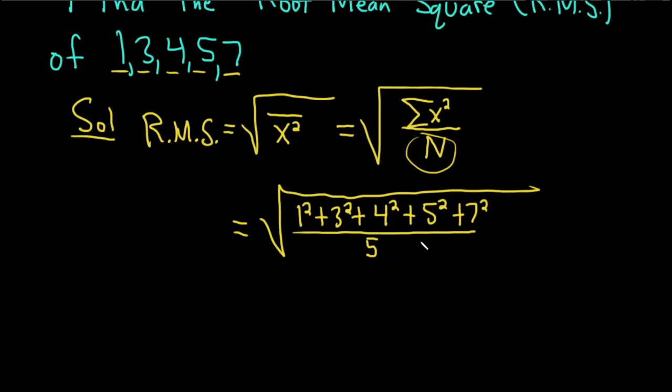Let me work it out exactly. 1 squared plus 3 squared plus 4 squared plus 5 squared plus 7 squared. This is actually 100 up top. So we get 100 over 5.